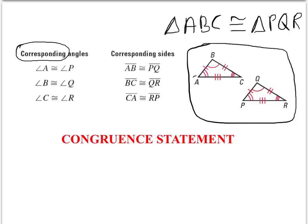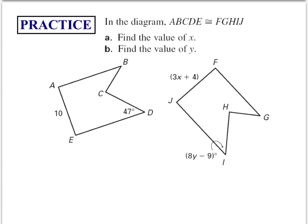Corresponding means they're in corresponding positions. If angle A is in the back left corner, then P would be its corresponding angle. Similarly, if angle B is at the top, Q corresponds to that location. This applies to sides as well — side AB on the left of the triangle corresponds to side PQ. So A corresponds to P, B corresponds to Q, and C corresponds to R.